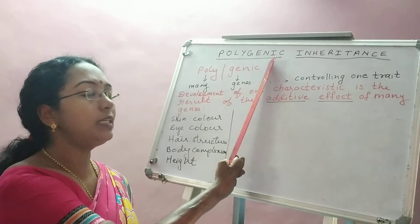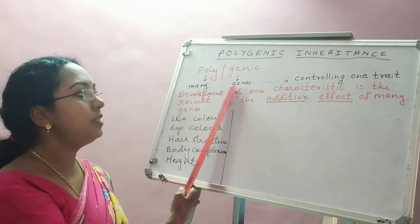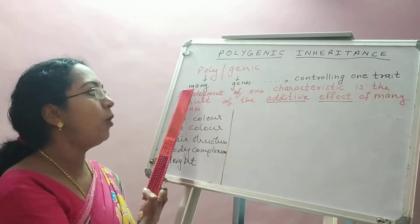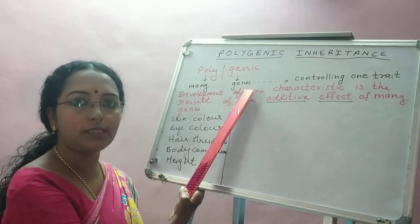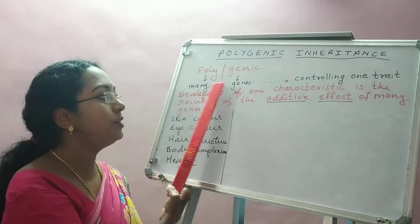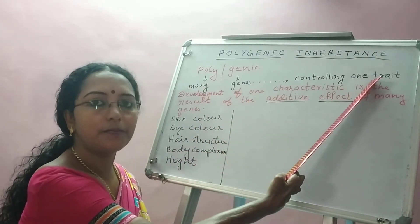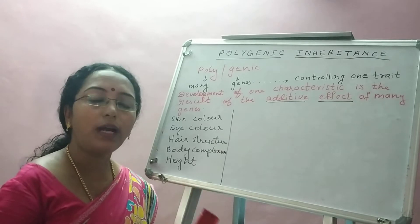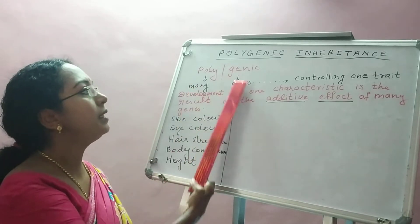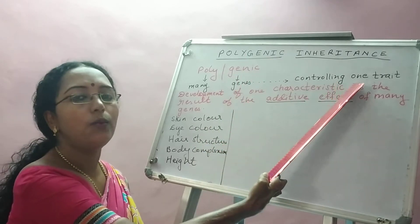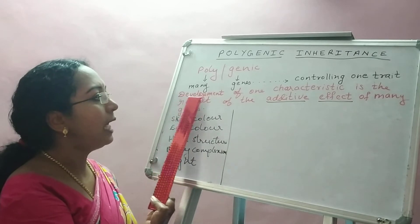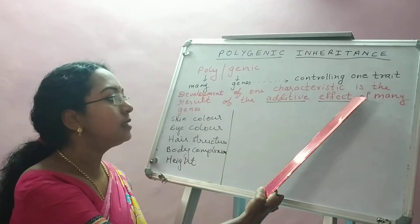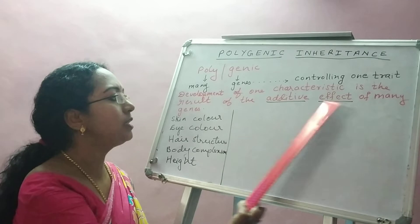Today the new concept — polygenic inheritance — means many genes controlling one trait. Poly means many, and genic refers to genes, so many genes are responsible for controlling one trait. This effect always happens in developmental processes; the development of one characteristic is the result of the additive effect of many genes.